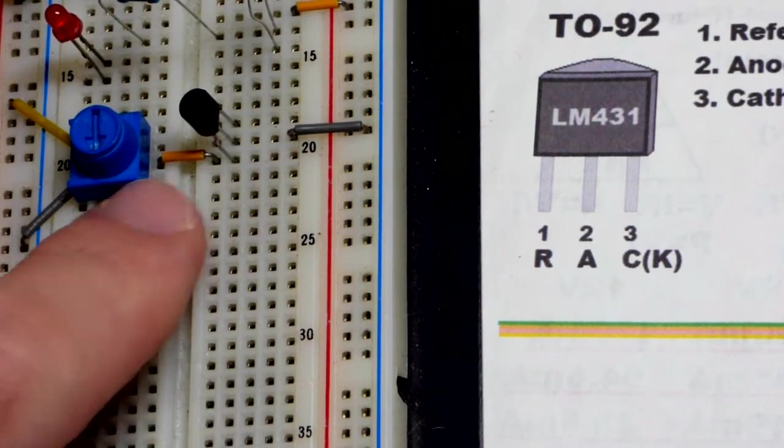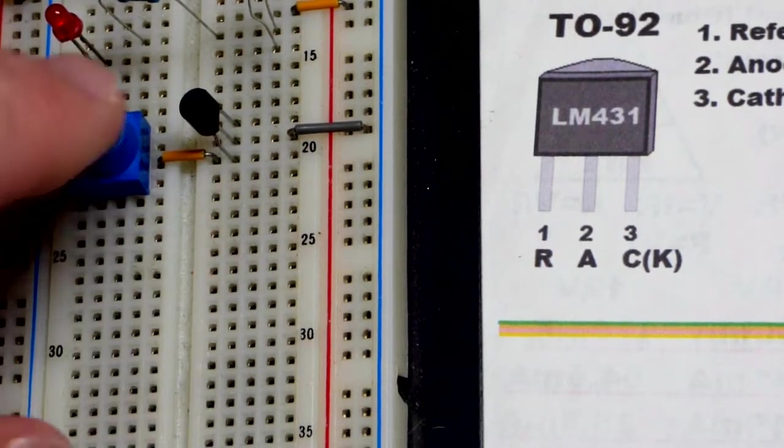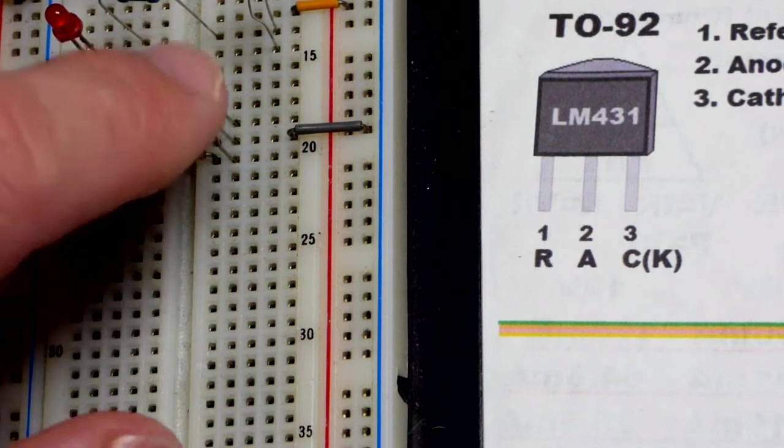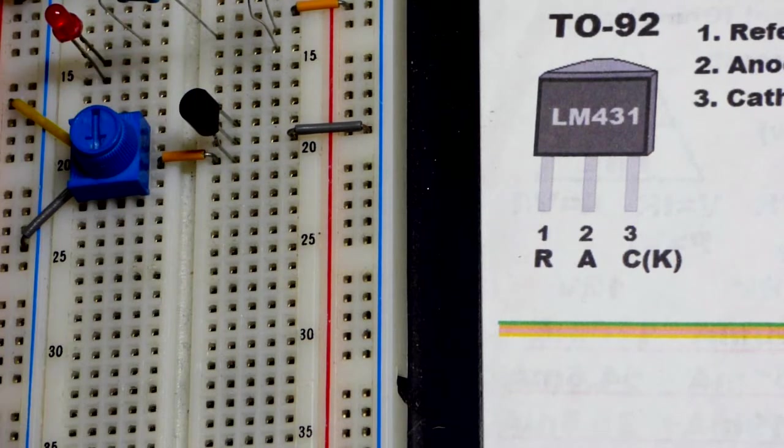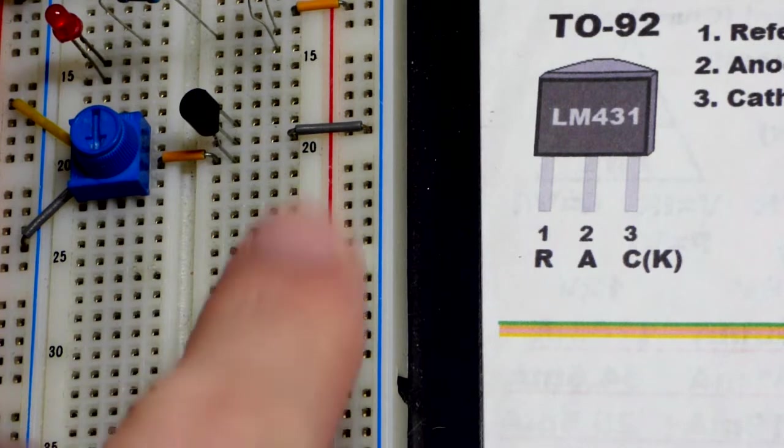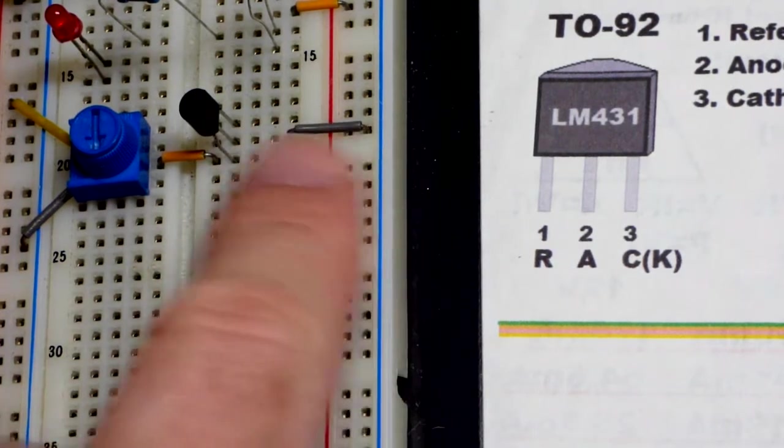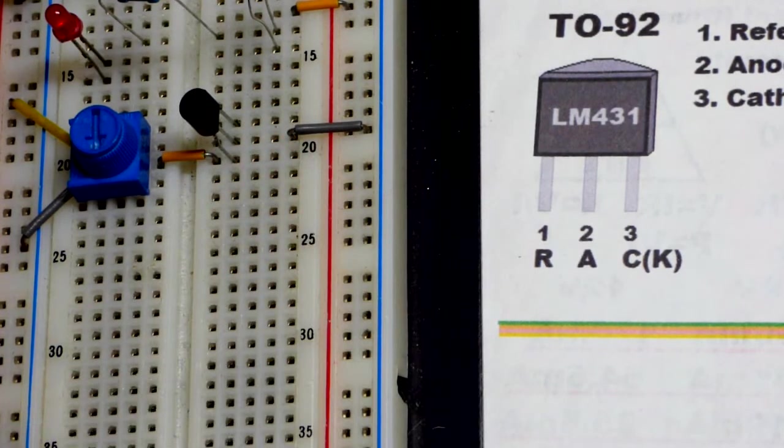The middle pin comes to that jumper and that is attached to the wiper, so I can adjust the voltage coming to the LM431. Now the anode, as I said, is connected to ground, at least in this particular circuit.